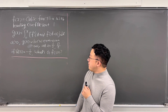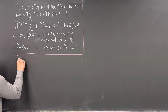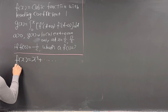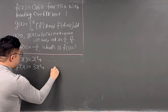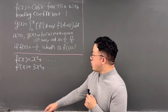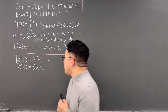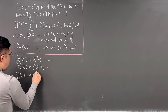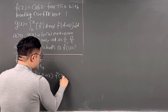The question already said f(x) is a cubic function with leading coefficient of 1, so f(x) has to look like x cubed plus other terms. That means f'(x) should look like 3x squared plus other terms. About g(x): since g(x) is an integral from 0 to x, using the fundamental theorem of calculus, we can get g'(x) quite easily. So g'(x) is the same as f'(x+a) times f'(x-a).